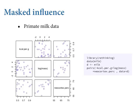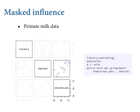Here's the animation to show that. There are kilocalories per gram — you can't see anything with those two. Log mass and neocortex percent are clearly positively associated with one another, and that's what creates the masking effect: they're associated within species.